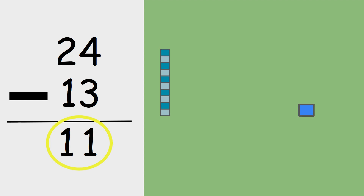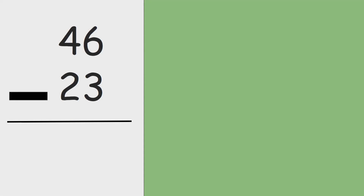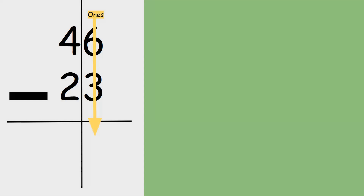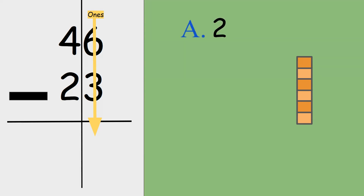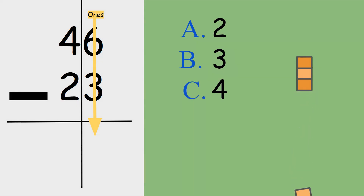Let's try another question — this time I'm going to need your help. 46 minus 23. In the ones, we have six take away three. Is the answer two, three, or four? Six take away three is three.